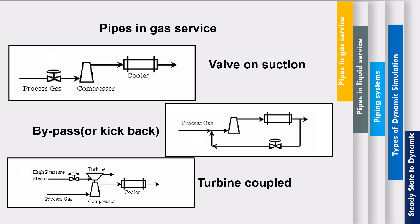So, these are the basic things we should know before going to the actual tutorial simulation of dynamic systems on HYSYS. The most common gas configurations are: placing a valve before the compressor to control flow rate; adding a kickback stream from outlet to inlet with a valve; and connecting a turbine on the same shaft to control compressor speed and save energy. That is it for today — please give a thumbs up and subscribe to the channel if you liked this video.